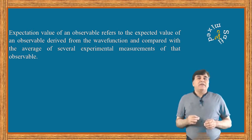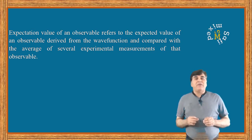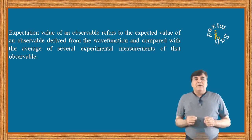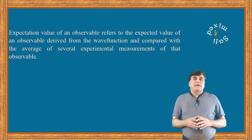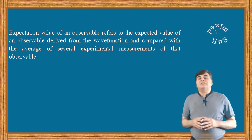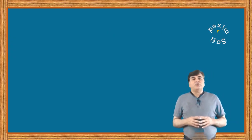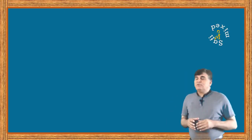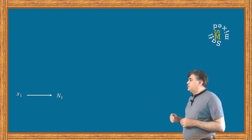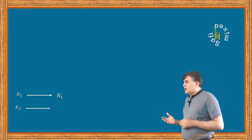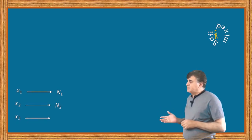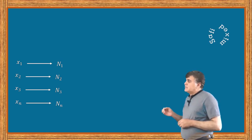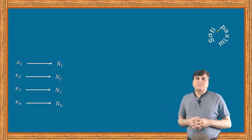To understand the concept of expectation values more clearly, let me begin with an example regarding the average values of classical mechanics. Let us perform an experiment for repeatedly measuring the position of a particle. Let the output of our repeated measurements go like this: we measure position x1 one time, position x2 two times, position x3 three times, and so on up to position x sub n, n sub n times.